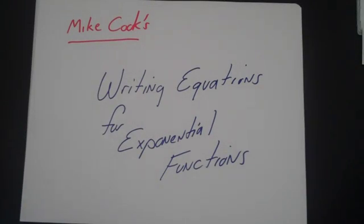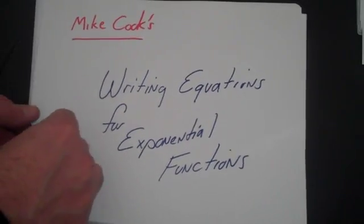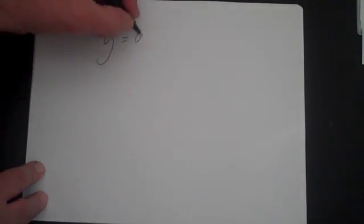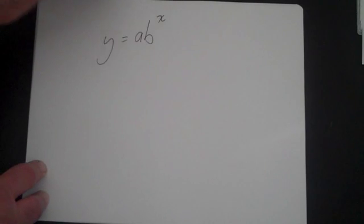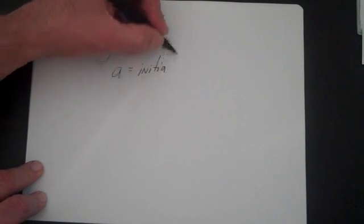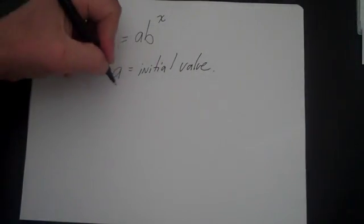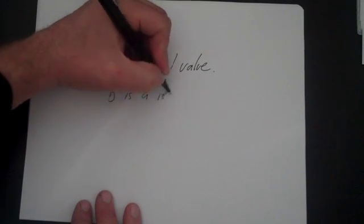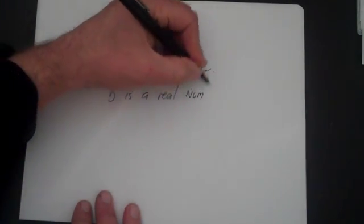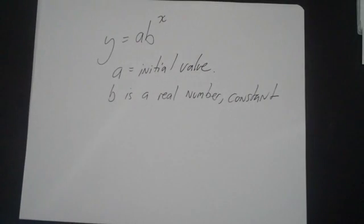Now let's look at writing equations for exponential functions. The first key is that all exponential functions, or at least the basic exponential functions, are all in the form of y equals a times b to the x, where a is the initial value and b is a constant. And with those two, these are actually pretty easy problems.